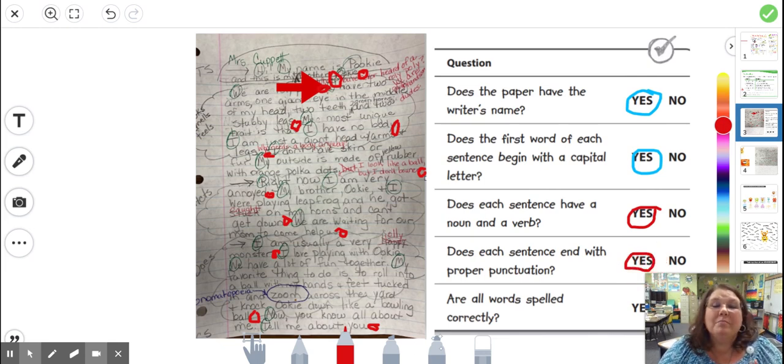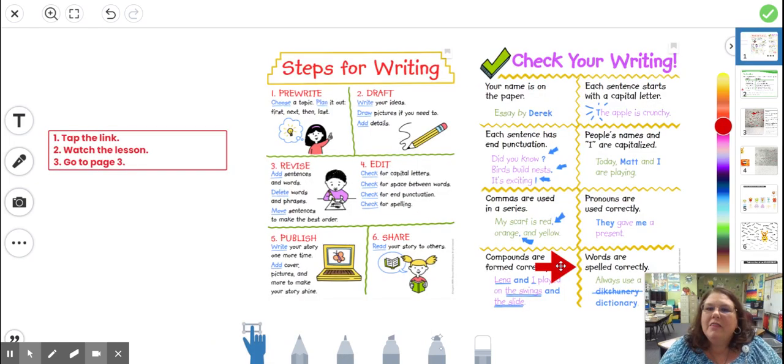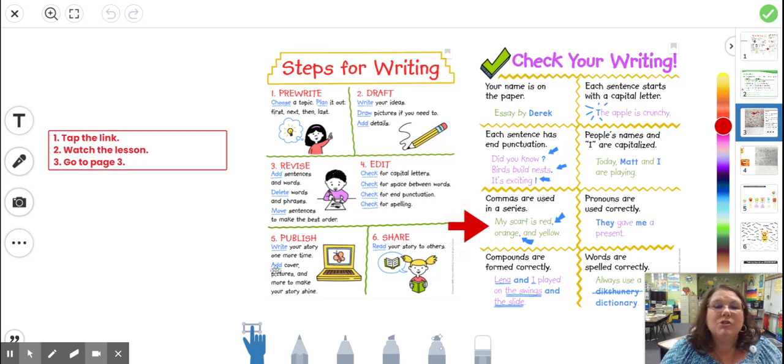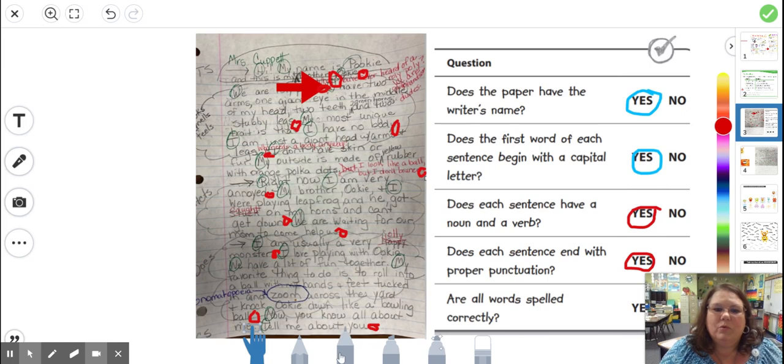remember in a list that we put commas between the adjectives. For example, my scarf is red, orange, comma, and, before the last one, yellow. So we need to look at that in our paper. Let me model that for you. We're going to do it in orange. So I'm going to get an orange. Now remember, you're going to be doing this on your paper.